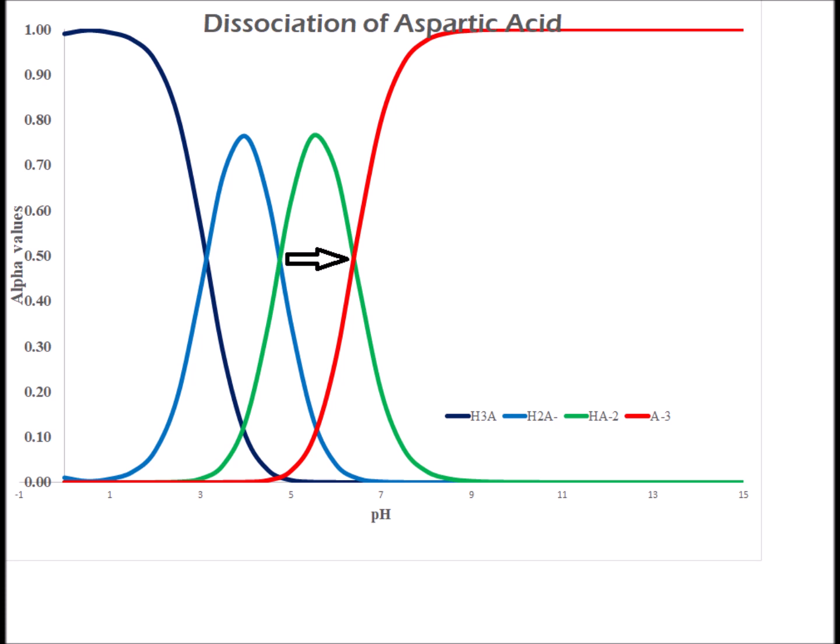Finally, here we have the crossover between the monoanion and the dianion — the most deprotonated form of aspartic acid. This occurs at a pH roughly around 9.96, because that is the pKa of Ka3 for aspartic acid.